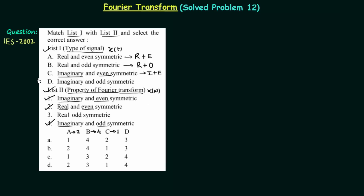With this we can say that D will match to 3, but we will still verify. Signal D is imaginary and odd. When xt is imaginary and odd, the Fourier transform is real and odd. The third type of Fourier transform is real and odd, so D will match to 3.